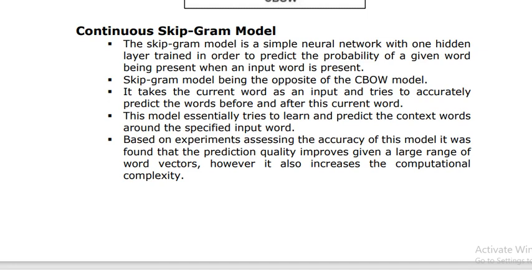The second model is the Skip-gram model. The Skip-gram model is a simple neural network with one hidden layer, trained to predict the probability of a given word being present when the input word is present. Being the opposite of the CBOW model, it takes the current word as input and tries to accurately predict the words before and after it. The model essentially tries to learn and predict the context words around the specified input word. Experiments show that prediction quality improves with a large range of word vectors, though it also increases computational complexity.